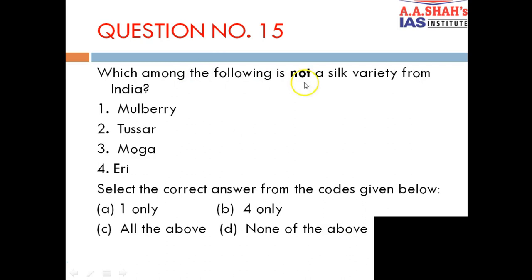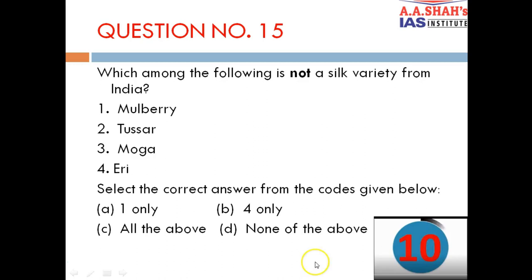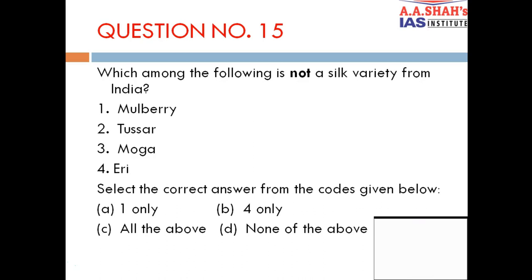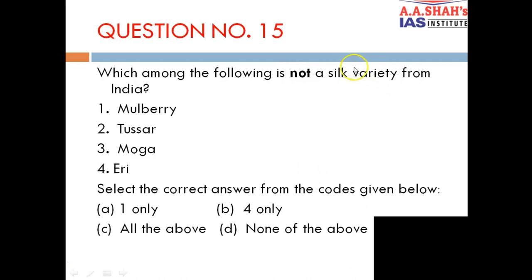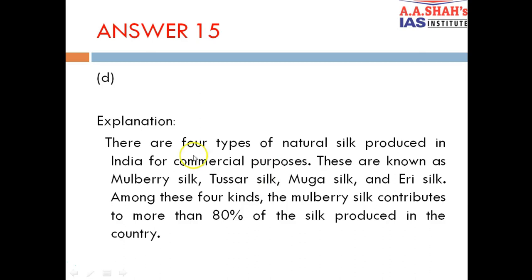Question 15: Which among the following is NOT a silk variety from India? 1. Mulberry, 2. Tussar, 3. Muga, 4. Eri. The correct answer is D — none of the above, because all four are silk varieties from India. There are four types of natural silk produced in India for commercial purposes: Mulberry silk, Tussar silk, Muga silk and Eri silk. Among these, Mulberry silk contributes more than 80% of silk produced in the country.